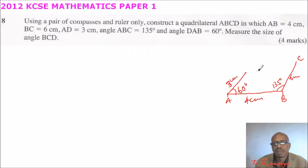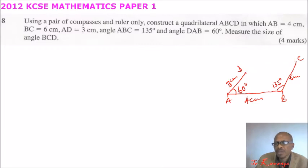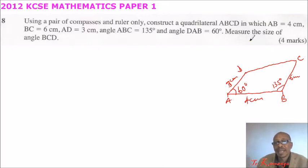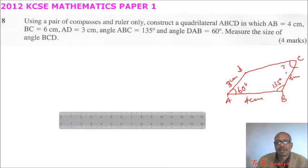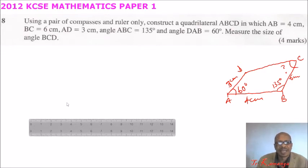Then what you are supposed to do is join the points so that we have our D. Join this line to come up with the position of D. You are supposed to find angle BCD — measure that angle. Now we have a rough idea of how our figure should look like.